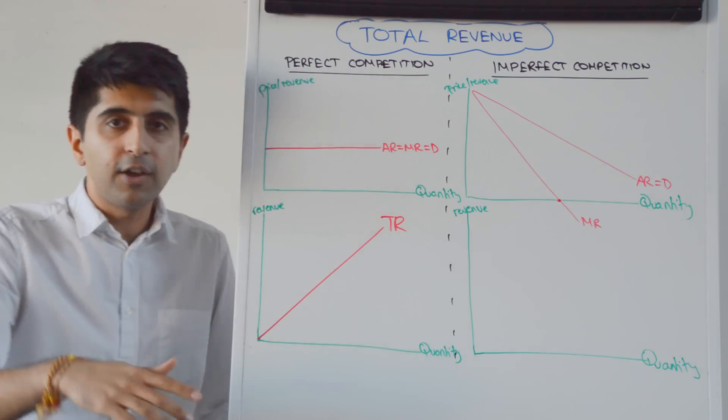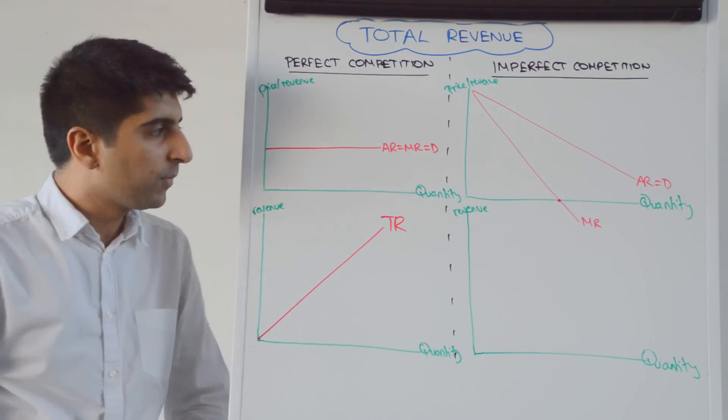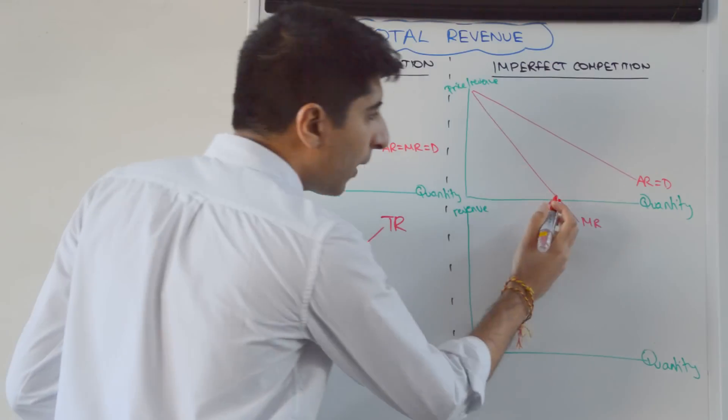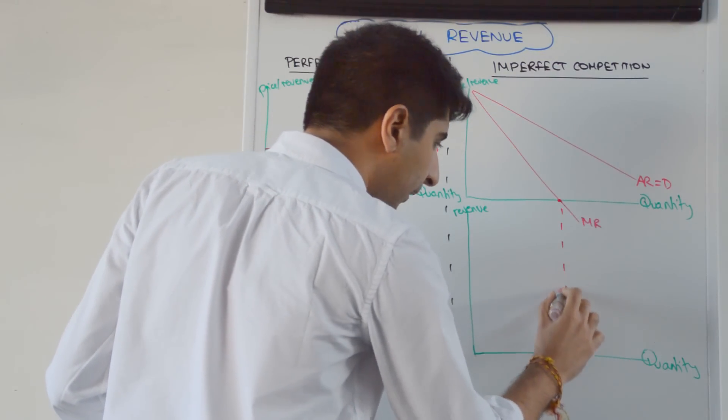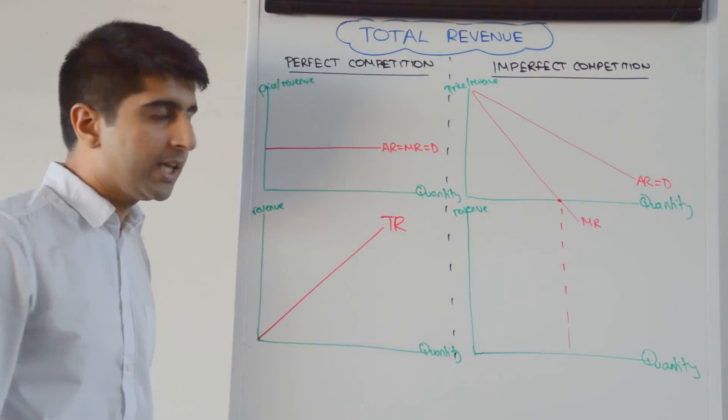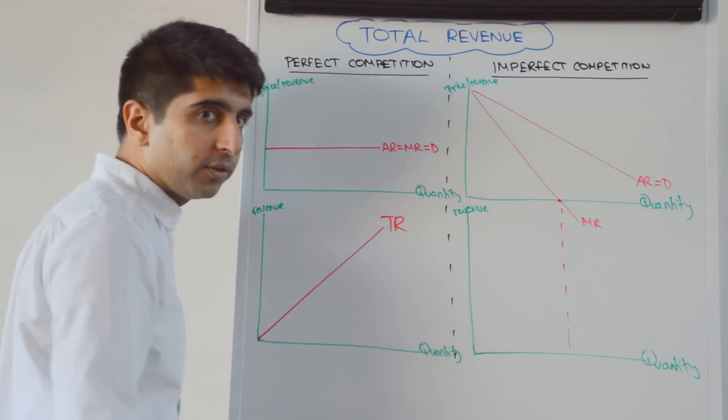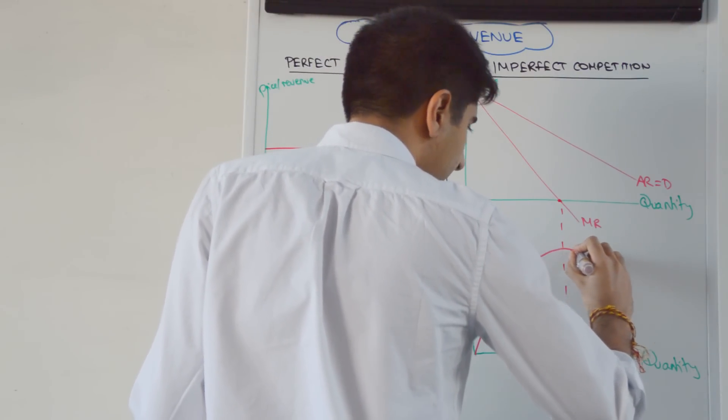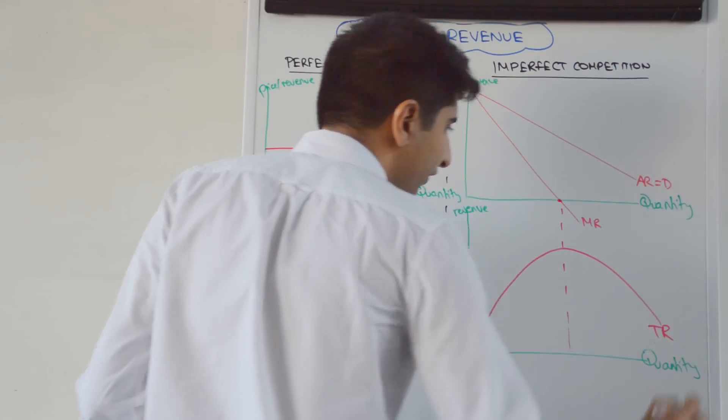Thereafter, MR goes negative, which will pull down total revenue. So the way to draw it, always draw these two curves first, then where MR is zero, take that point down and make sure when you draw your TR that the peak is at this quantity value, something like this. So peak there and then it starts to fall.